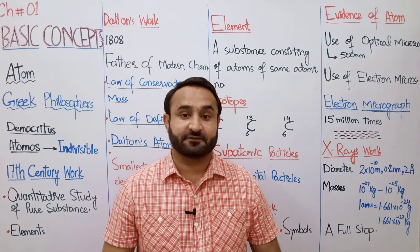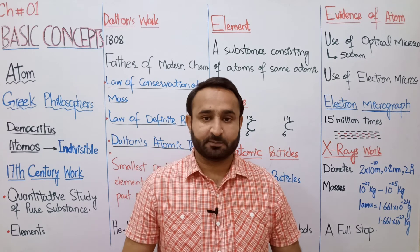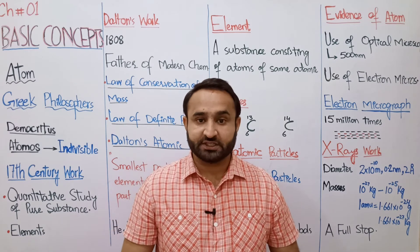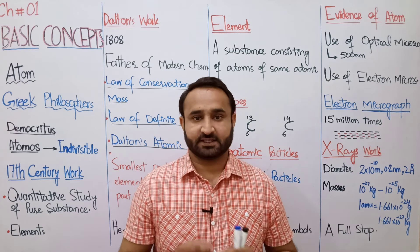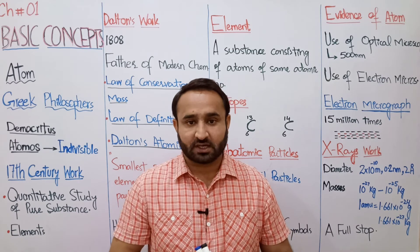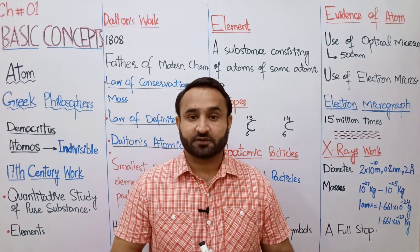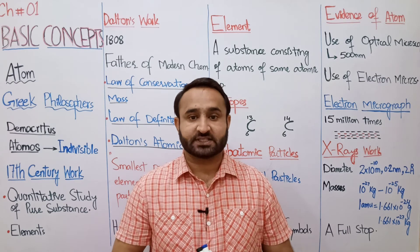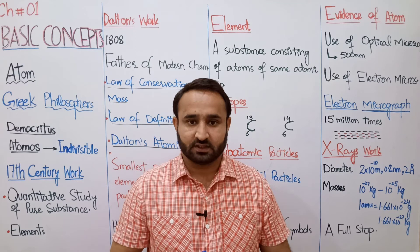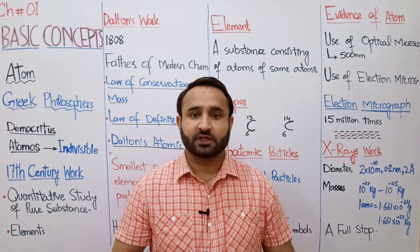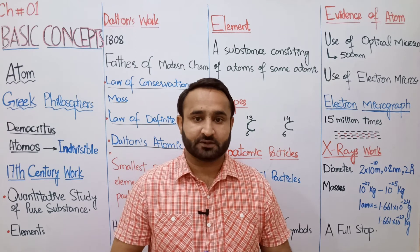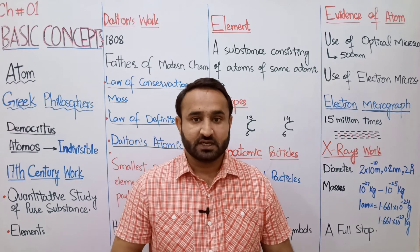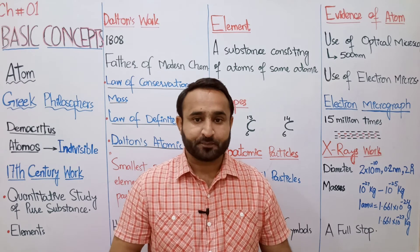ہم دیکھتے ہیں Greek philosophers۔ سائنس کی ابتداء Greek age یعنی یونانی دور سے ہوتی ہے۔ تو atom کا concept بھی Greek philosophers سے شروع ہوتا ہے۔ شروع میں science کو natural philosophy کہا جاتا تھا، اس لیے اس دور کے scientists، chemists، اور biologists کو بھی philosophers کہا جاتا تھا۔ اس لیے ہم نے کہا Greek philosophers۔